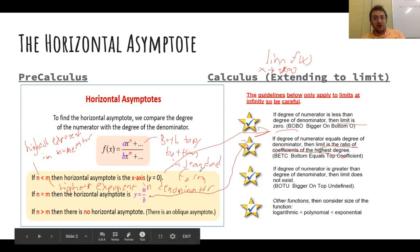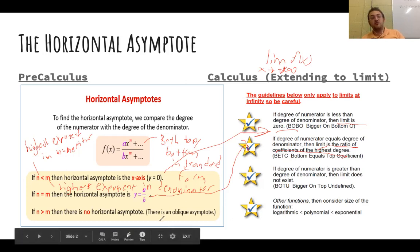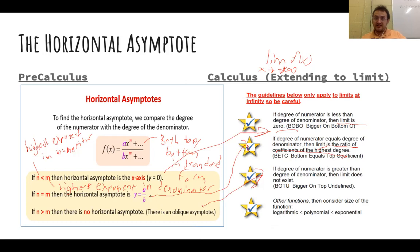In pre-calc, we didn't call it the limit, we just said compute the horizontal asymptote. And then if we have a degree in the numerator higher than the degree in the denominator, then that limit does not exist. And for those of you who are going to be going on and studying a lot of calculus, just out of curiosity, we also have other types of functions that have asymptote type of behavior. So logarithmics don't go up as fast as polynomials, and they don't go up as fast as exponential functions. So you may want to just pause the video, make sure that you got all this down, because these are going to be the tips that are going to guide you through our examples.